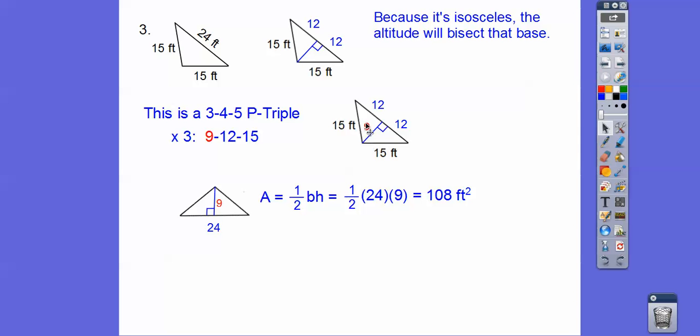Now if this was not isosceles, I couldn't do this because it wouldn't bisect that base. But since it's an isosceles triangle, when I draw the altitude, it always bisects the base. So I get 9 right there. So here's the triangle stood up. One half base times height. And I get 108 feet squared.